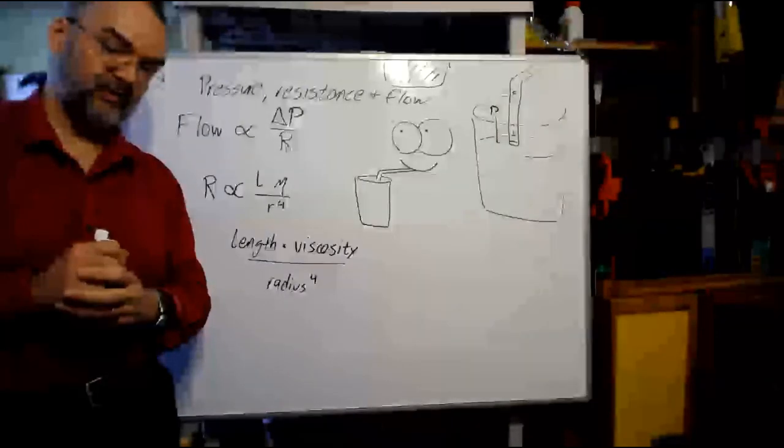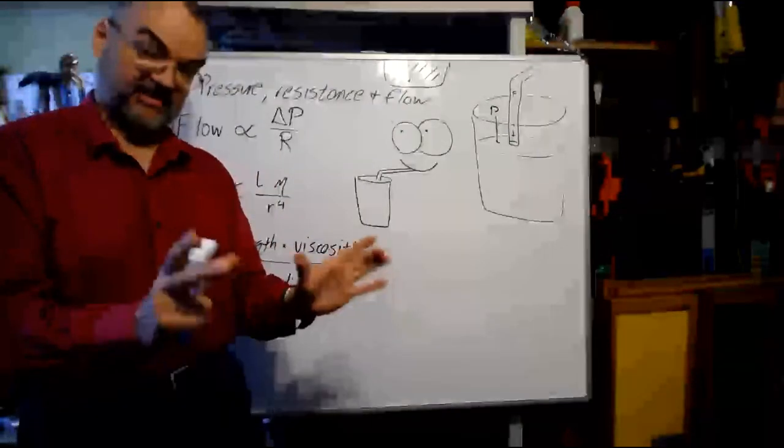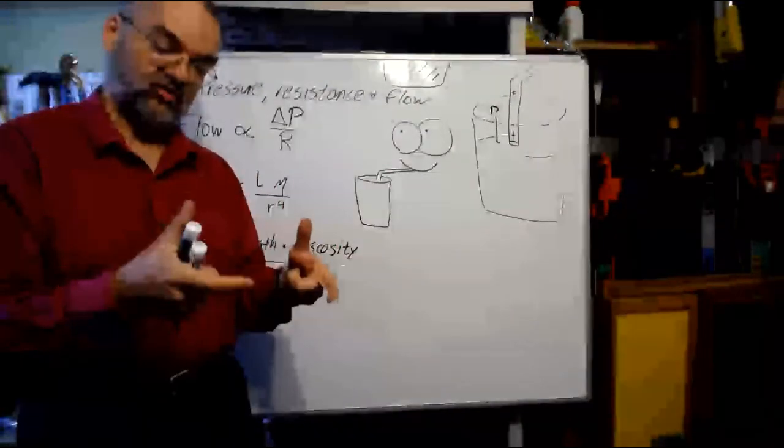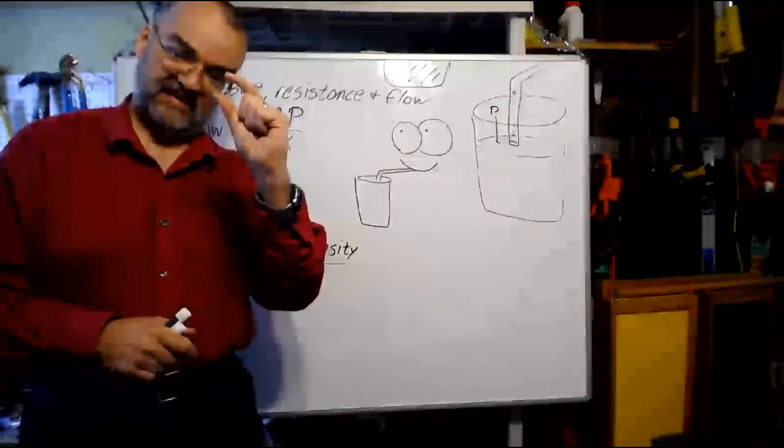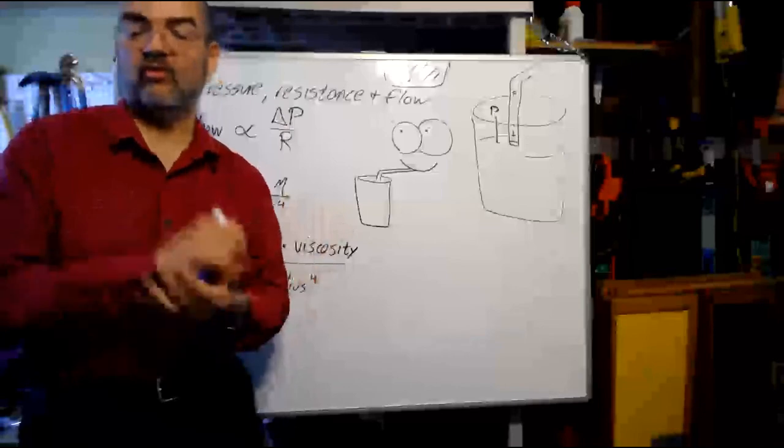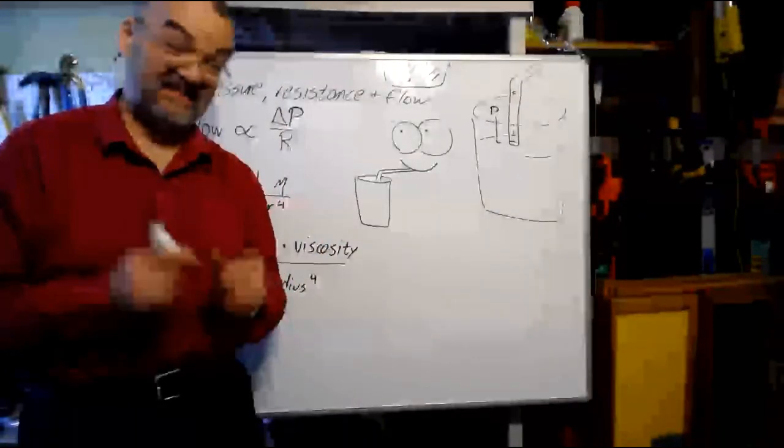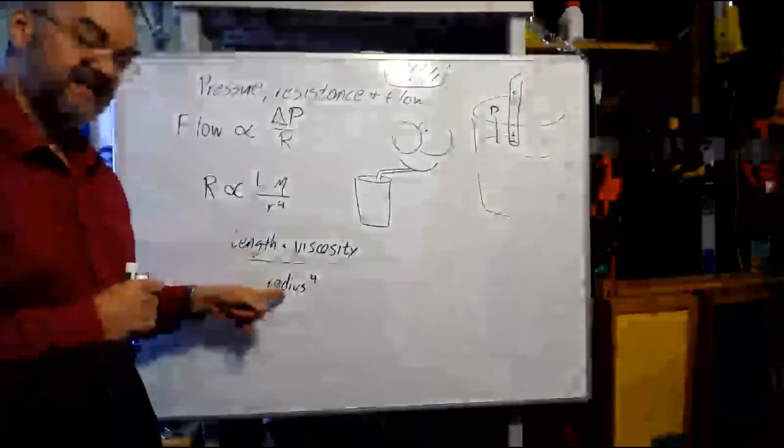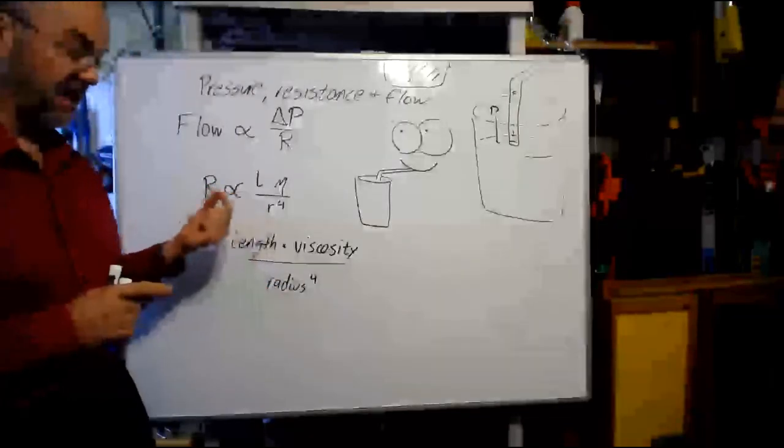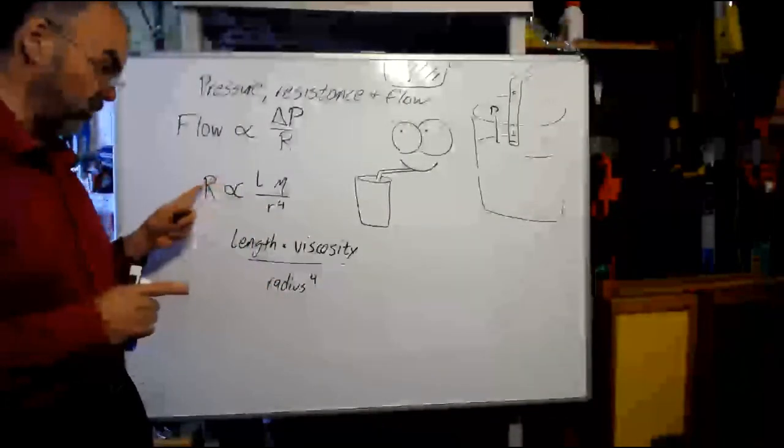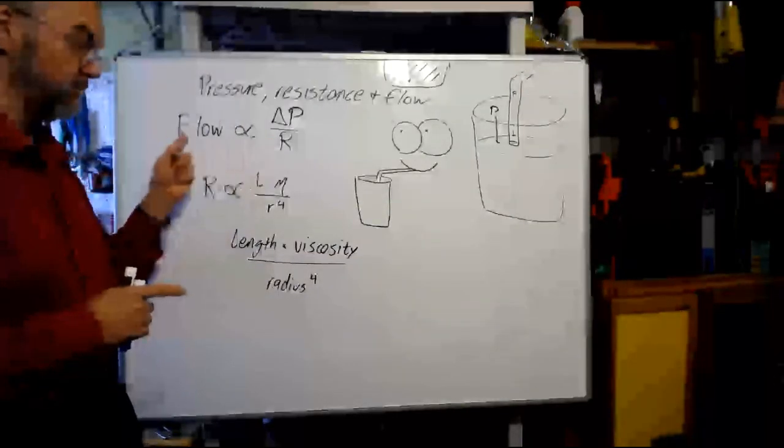Now let's look at the last term, radius. Imagine two situations, two cups, same milkshake, same length of straw, but in one case it's a coffee stirrer, and in the other case it's a nice big straw. Which one will you get more milkshake flowing through for the same amount of sucking pressure? Definitely the bigger straw. Radius, the width of the straw, has a huge effect on this. Higher radius, bigger number here, means lower resistance. Notice it's on the denominator. Lower resistance means more flow.